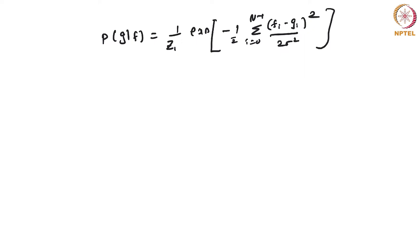How did this happen? We treat all pixels independently of each other. The probability of getting a noisy image G is the product of the probabilities of observing the individual pixels. Since this is an exponential distribution, the product adds up in the exponent.